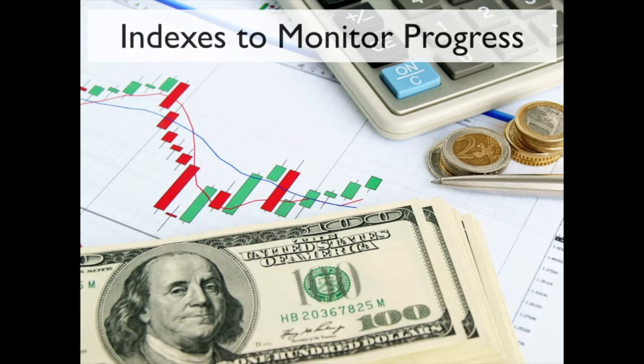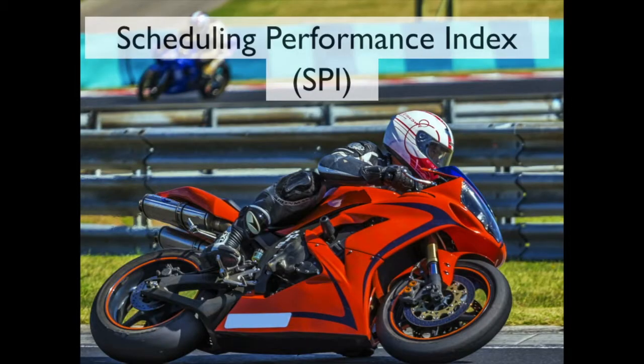We're going to take a look at another index that we can use to monitor our project progress. That is SPI, or Scheduling Performance Index. It measures our scheduling efficiency, or how fast we're getting our project completed.